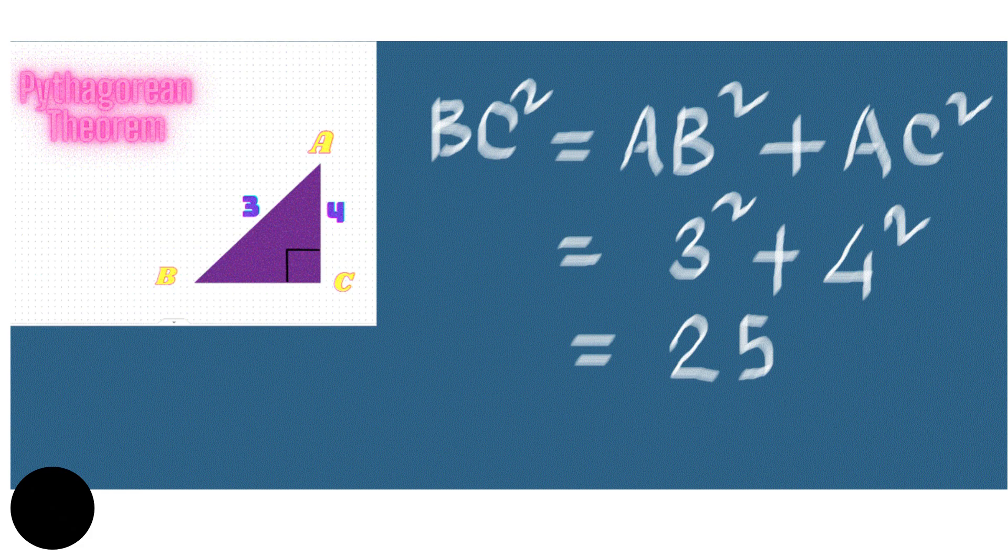So if you see, the hypotenuse ABC is five units long. So that means the triangle with a size three, four, five, you should recognize as being right angled.